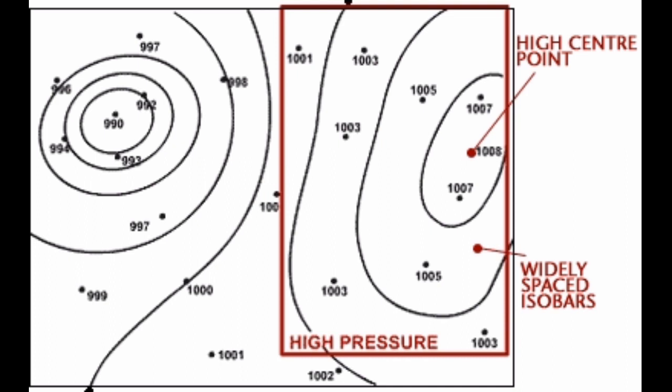The highest pressure occurs at the center and is known as the high pressure center. Anti-cyclones can bring warm and sunny weather in summer but cold and foggy weather in winter.